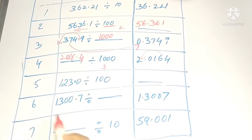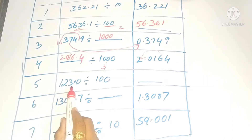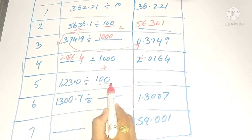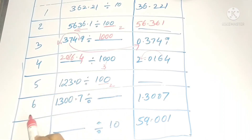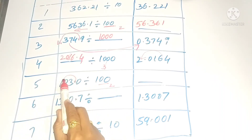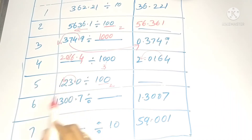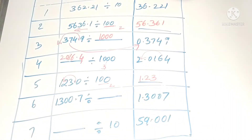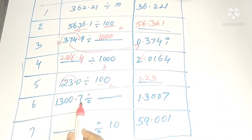In the fifth one, 123.0 is given. When we divide with 100, there are two zeros, so the decimal point moves two place values to the left. It becomes 1.23.